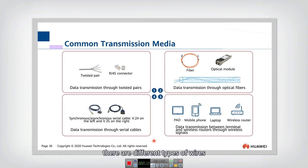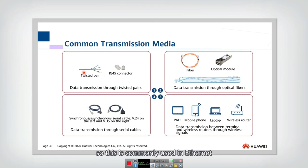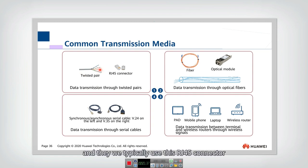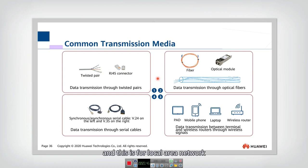For wired media, there are different types of wires. The most commonly used is the twisted pair, which is commonly used in Ethernet, the local area network. The data are transmitted through these pairs, which are twisted with each other. We typically use the RJ45 connector to connect this twisted pair, and this is used for local area networks.